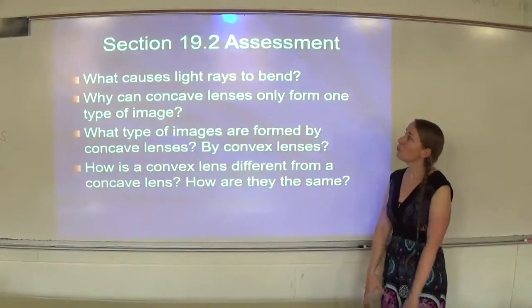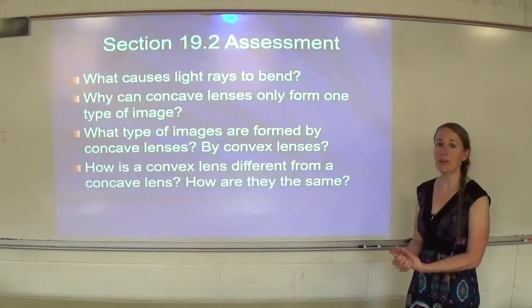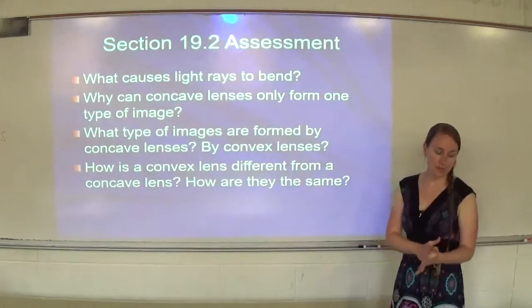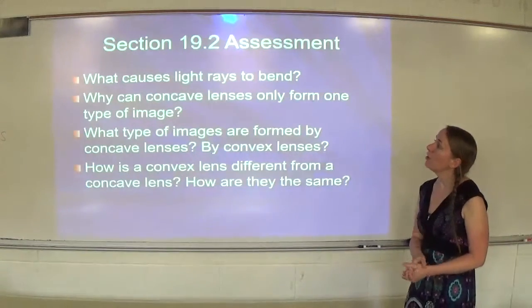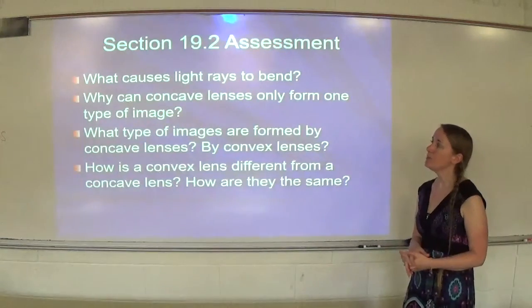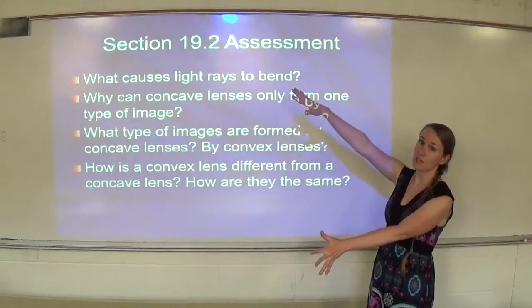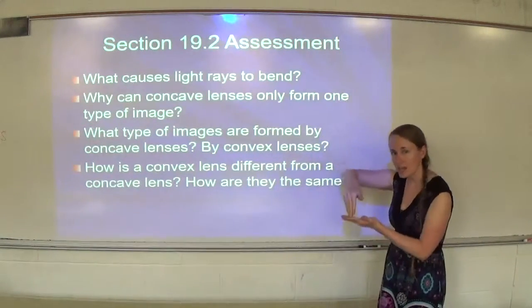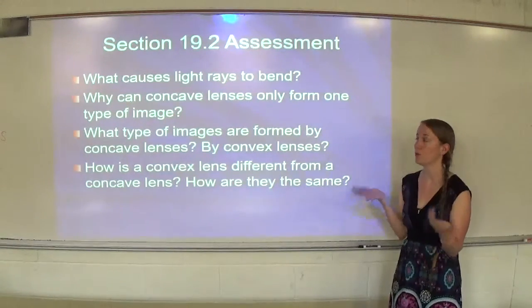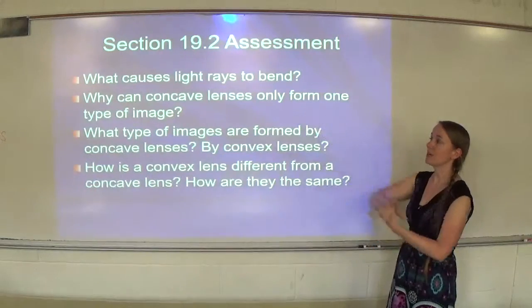Section assessment: What causes light rays to bend? Entering a new medium at an angle. Why can concave lenses only form one type of image? Concave lenses spread the light rays out, so since they don't actually meet at a focal point, they can only form an image where the rays appear to come from — which is a virtual image. So the answer is: they spread light rays out, producing only virtual images.